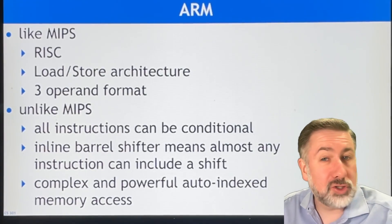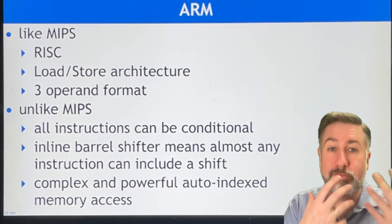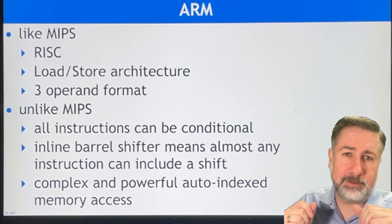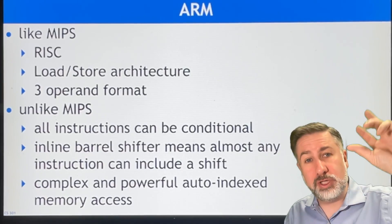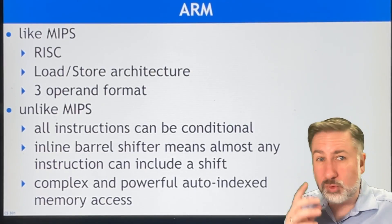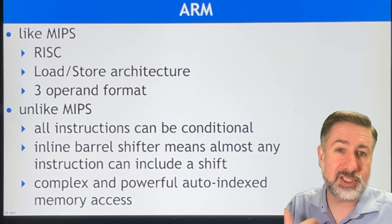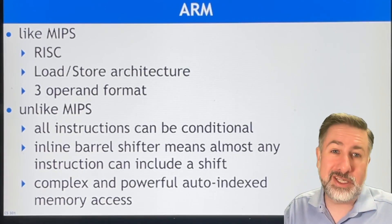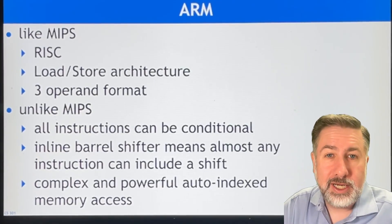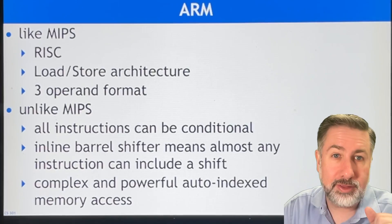Reduced instruction set machines use a load-store architecture, which means you never operate directly on memory. You bring data in from memory, operate on it, and then put it back. This is the way things are done today because memory speed has not kept up with processing speed, so we have multiple layers of cache between the processor and actual RAM. We always have to bring stuff in from memory before we operate on it. In multi-processing systems, multiple processors may operate on the same data simultaneously, bringing copies in from memory — which creates a lot of complexity around caching and cache synchronization.